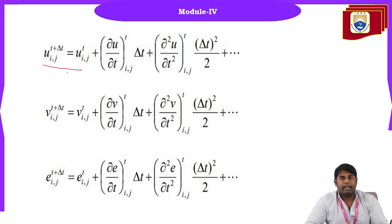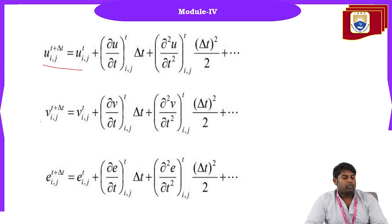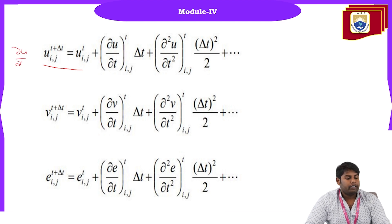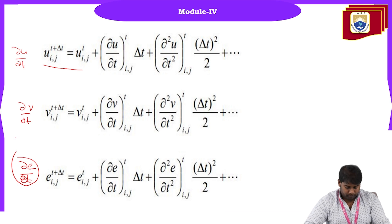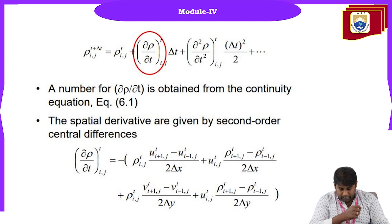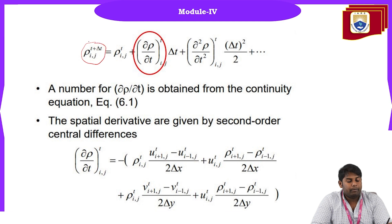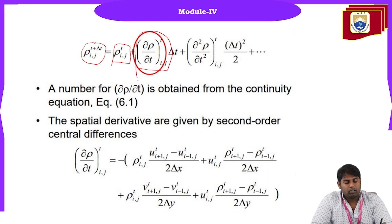Similar expressions can be derived for u-velocity from the x-momentum equation, v-velocity, and temperature or internal energy from the energy equation. So ρ(i,j)^(t+Δt) equals ρ(i,j)^t plus Δt·(∂ρ/∂t), and the same structure applies for the other flow variables.